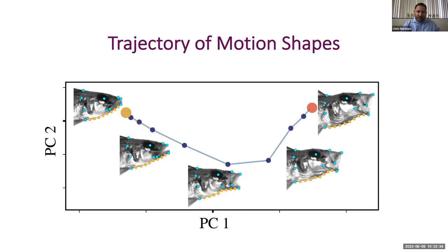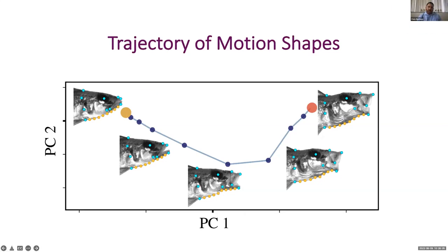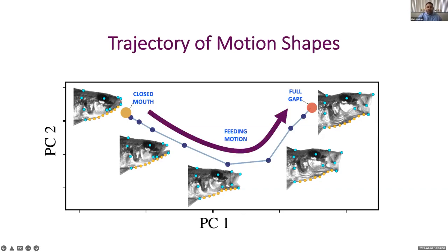Here's what the landmarks look like in motion as a fish rapidly expands its feeding apparatus to generate suction and capture its prey. In this framework, motion is represented by a series of shapes that track cranial movements during a feeding event. When we align the shapes for this motion, we end up with an ordered progression of head shapes — a trajectory. On PC plots throughout this talk, individual observations are head shapes at various stages of a motion. The point in yellow is the shape when the mouth is closed at the start of motion, the red point is the shape at full gape, and the points in between are the motion progressing from left to right.